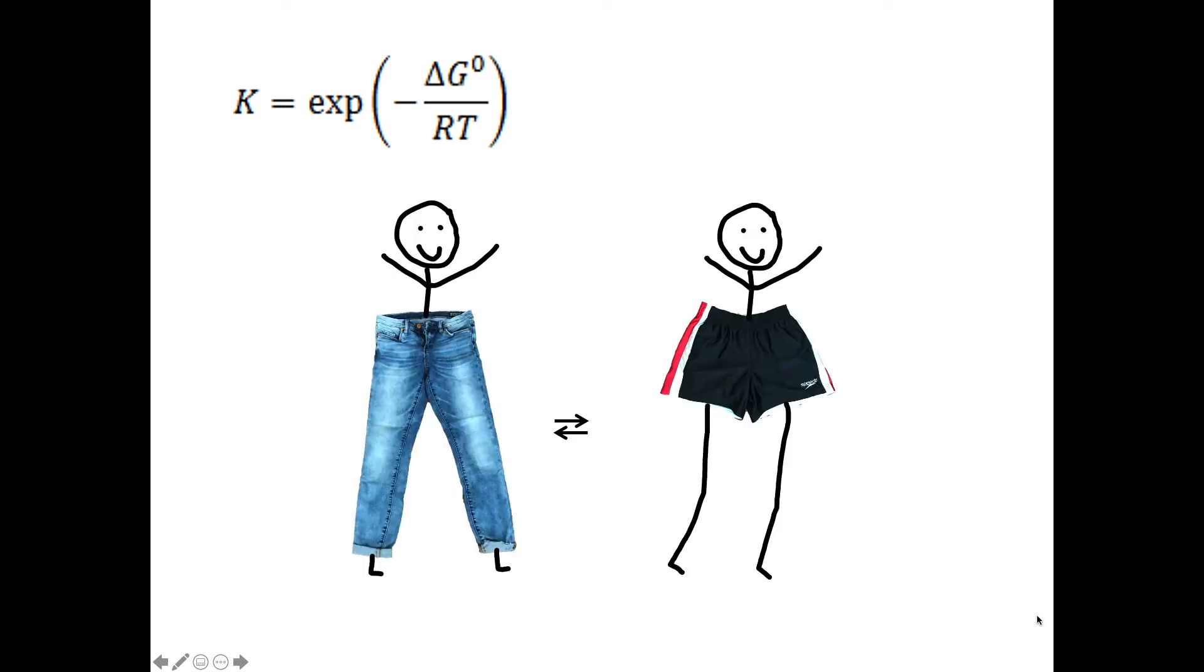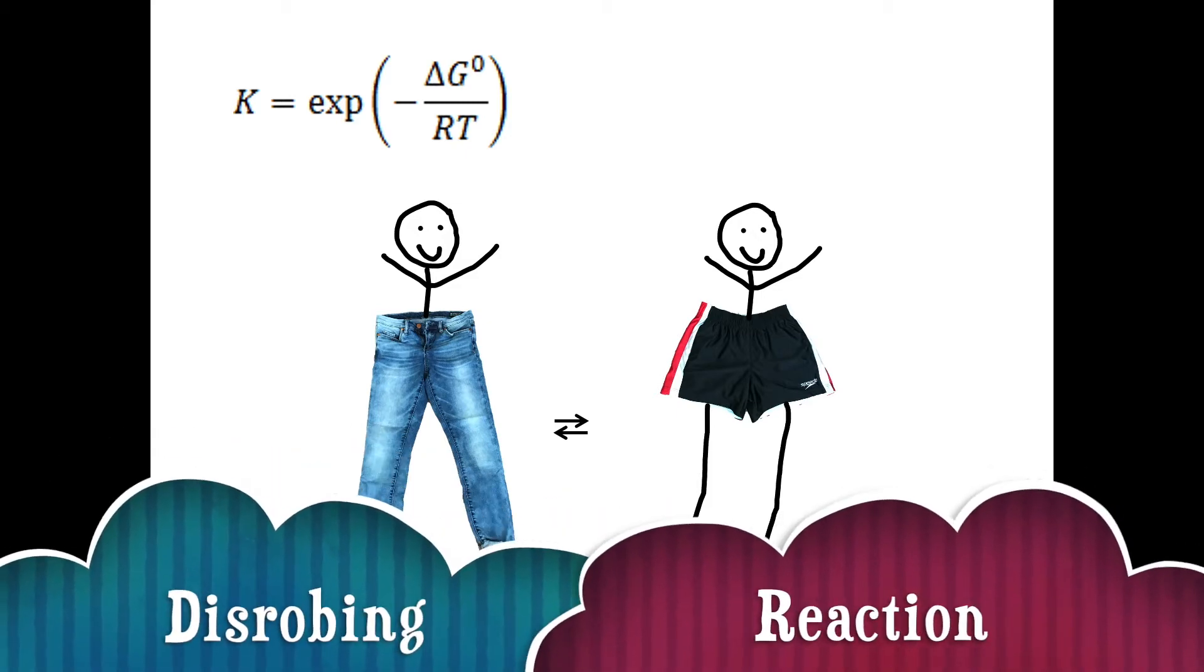There is actually a quantitative analytic relationship between the temperature change and the position of equilibrium that involves the energy change for the reaction. This experiment explores that relationship, all without laboratory chemicals or labware. We will consider the reaction whereby humans change from wearing long pants to wearing shorts. We call this the disrobing reaction.